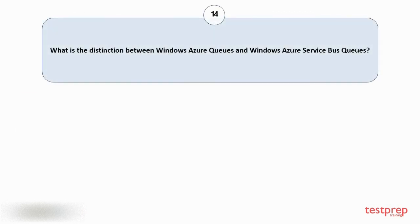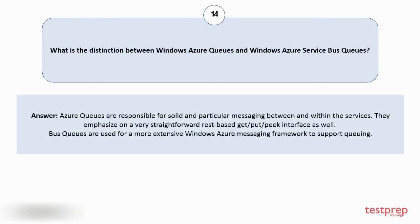Question number fourteen: what is the distinction between Windows Azure Queues and Windows Azure Service Bus Queues? Your answer is: Azure Queues are responsible for solid and reliable messaging between and within services. They emphasize a straightforward REST-based get, put, peek interface. Service Bus Queues are used for a more extensive Windows Azure messaging framework to support queuing.